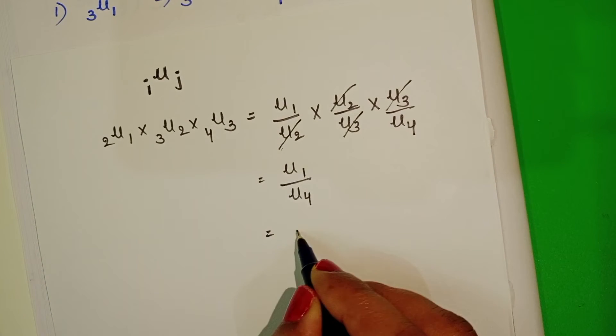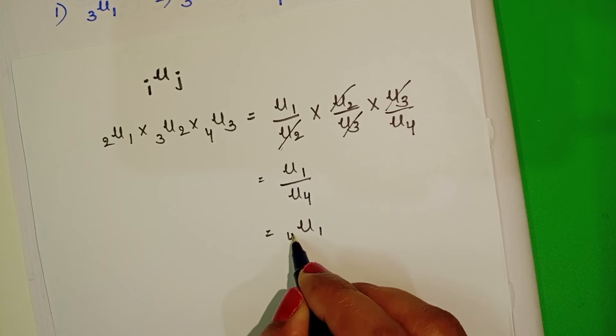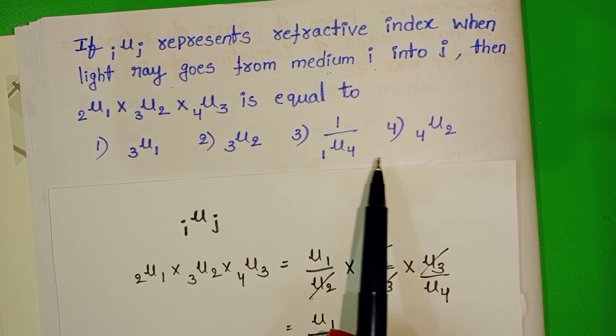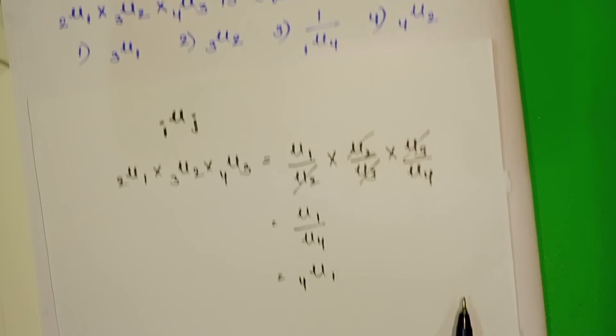Then how can we write mu 14? But in options there is no mu 14. Take the reciprocal of mu 14.